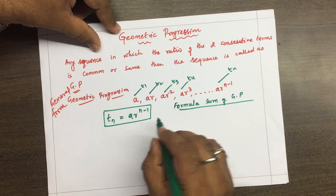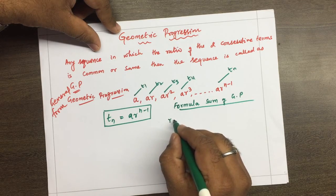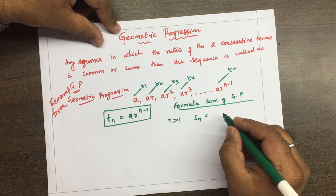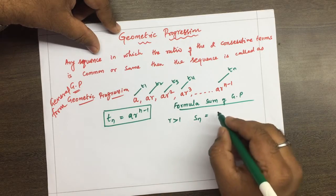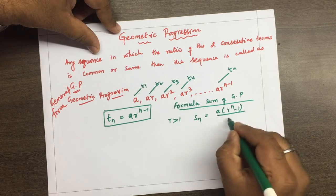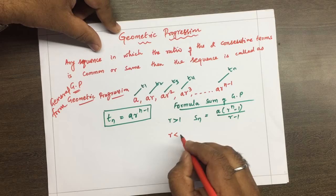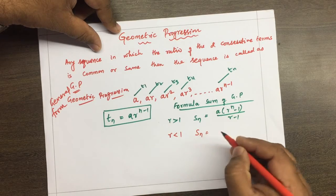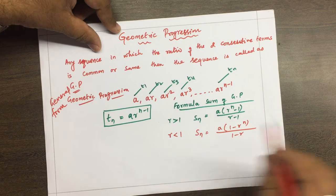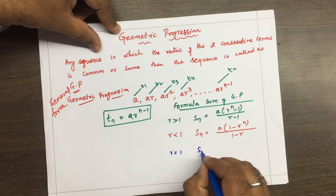If the common ratio r is greater than 1, then the sum of n terms of the geometric progression is given by a(r^n − 1) / (r − 1). When the common ratio r is less than 1, then Sn equals a(1 − r^n) / (1 − r). When r is equal to 1, then Sn equals n times a.